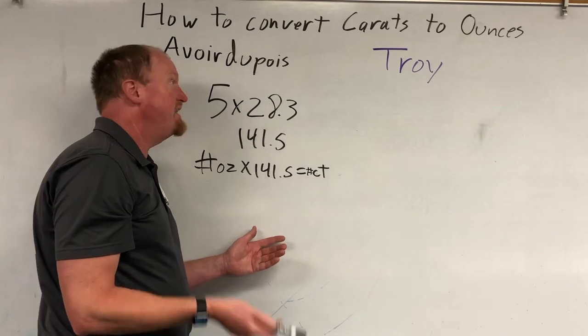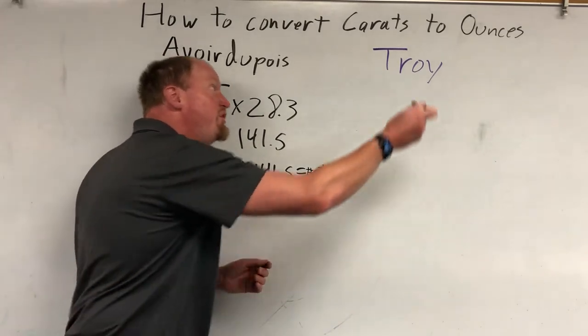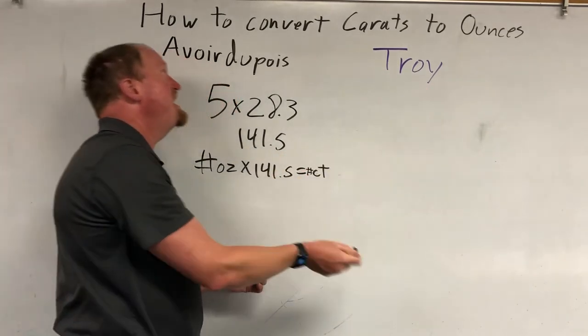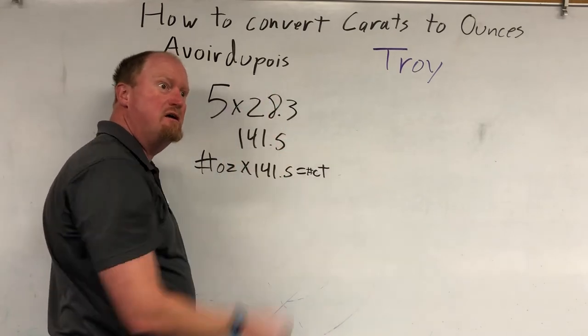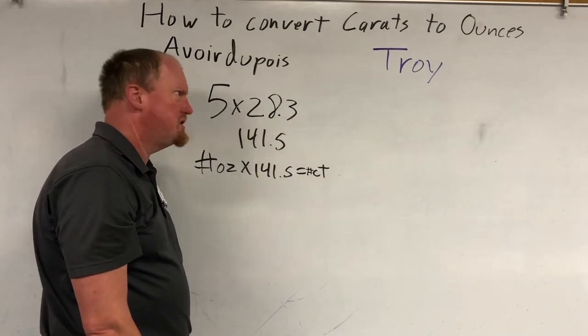Just to make things more confusing: troy ounces are the French ones and the avoirdupois are the British ones.